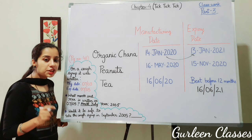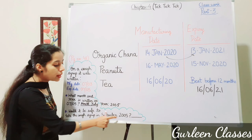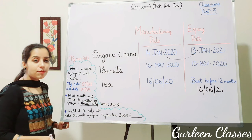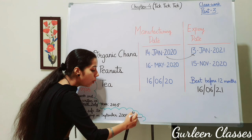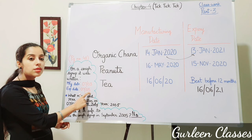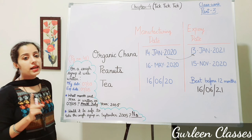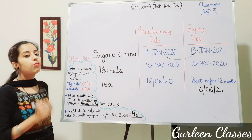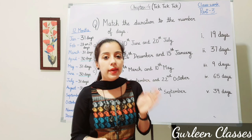The second question asks: would it be safe to take the cough syrup in September 2005? No, it is not safe, because the expiry date is July 2005 and you would be taking it in September 2005, which is after the expiry date. Write these answers in your book on page 48.